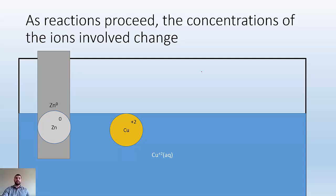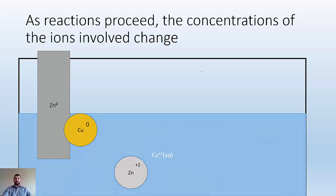As reactions proceed, the concentrations of the ions involved change. If this is our reaction, I've got a copper ion being attracted to the zinc, zinc giving its electrons up to the copper, which is going to reduce the copper and oxidize the zinc. Eventually, all of that zinc is going to dissolve into solution, and all of that copper ion is going to get used up. So the concentration of the copper ion is going to decrease.